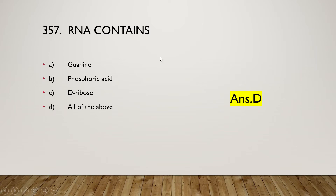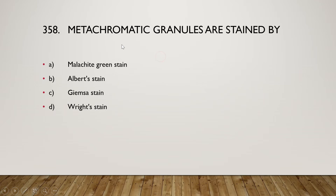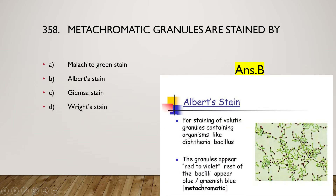Next: metachromatic granules are stained by malachite green stain, Albert stain, Ziehl-Neelsen stain, or Wright stain? The right answer is option B, Albert stain, which is used for metachromatic granules. Albert stain is used for staining volutin granules or metachromatic granules in organisms like diphtheria bacillus. The granules appear red to violet, while the rest of the bacilli appear blue or greenish blue.